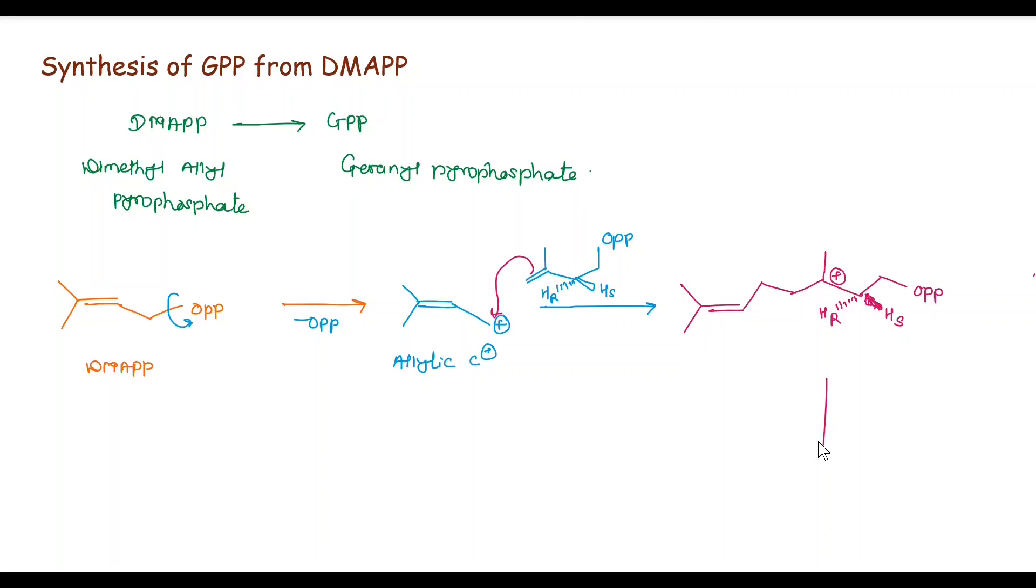In the next step, stereospecific loss of the HR proton occurs and we get here double bond, here CH2 and OPP. This is your GPP, geranyl pyrophosphate. You can write down this structure like that: here double bond, here CH2, CH2, here CH, here double bond, here OPP. This is the synthesis of geranyl pyrophosphate from DMAPP.